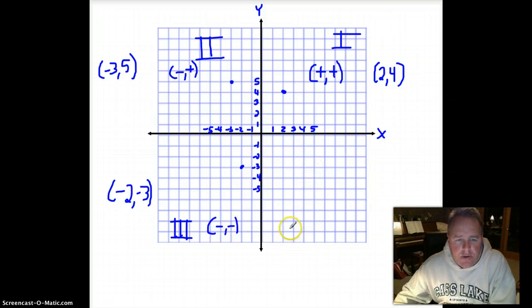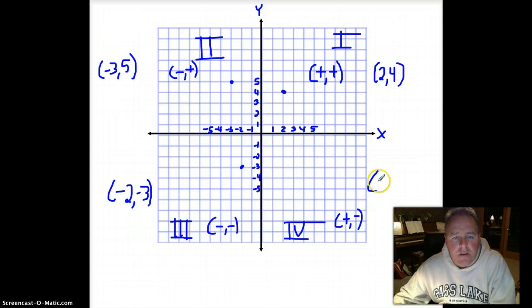To our last quadrant. Quadrant number four. This is going to have what we call a positive negative. Okay, which means my x number will be a positive, I'll say four, and my y number will be a negative, and I'll call that a four negative four.